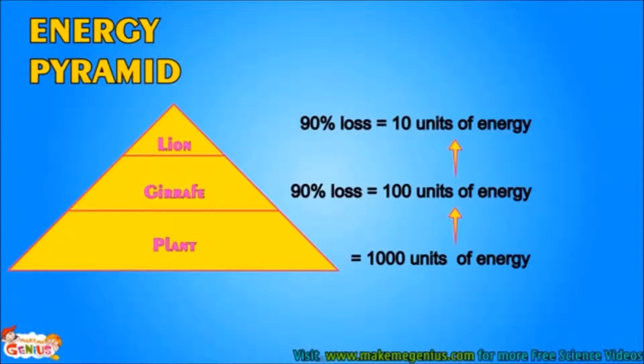To understand the energy pyramid, let us assume that the plant received 1000 units of energy from the sun. When the giraffe eats it, 90% of energy is lost, so the giraffe gets only 100 units of energy. When the lion eats the giraffe, 90% of energy is again lost, so the lion receives only 10 units of energy from the giraffe.